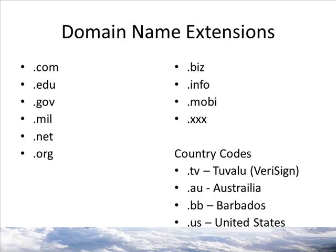Many more extensions were added later. Among these are .biz for business, .info for information, and .mobi for mobile. Sometimes you may also see a country code. For example, .tv is the country code for Tuvalu — a real country — but the extension is very popular because of its association with television. VeriSign handles all the domain names from Tuvalu, and the Tuvalu government gets 20%. Other examples: .au is Australia, .bb is Barbados, and .us is United States, though you usually don't see .us because we're the inventors of the internet.